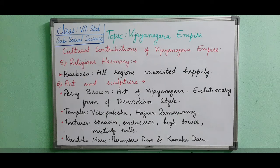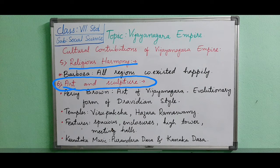Now next is their contribution to art and sculpture. Sculpture means the art of making objects from stone, wood, or clay — when we are making any model or object it is called sculpture. A historian, Percy Brown, visited and said that Vijayanagara's art is a transformation from the Dravidian style.